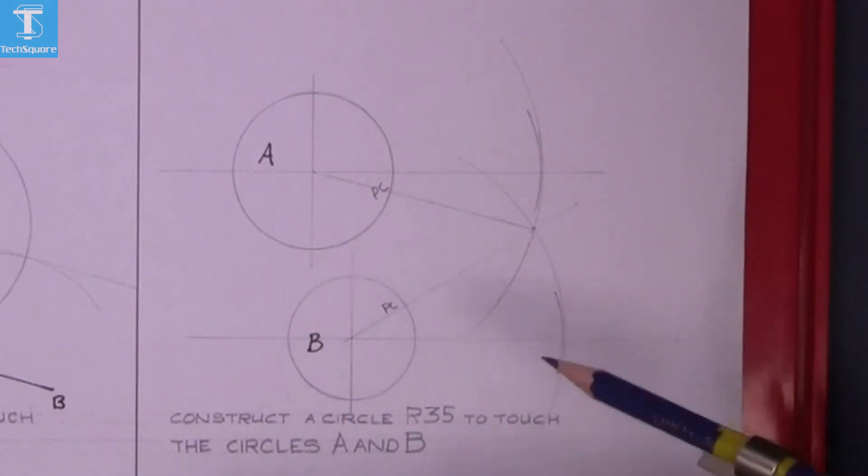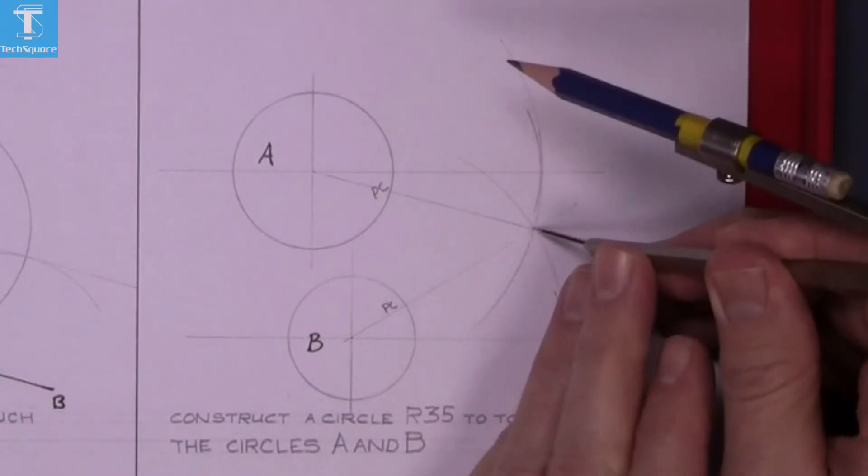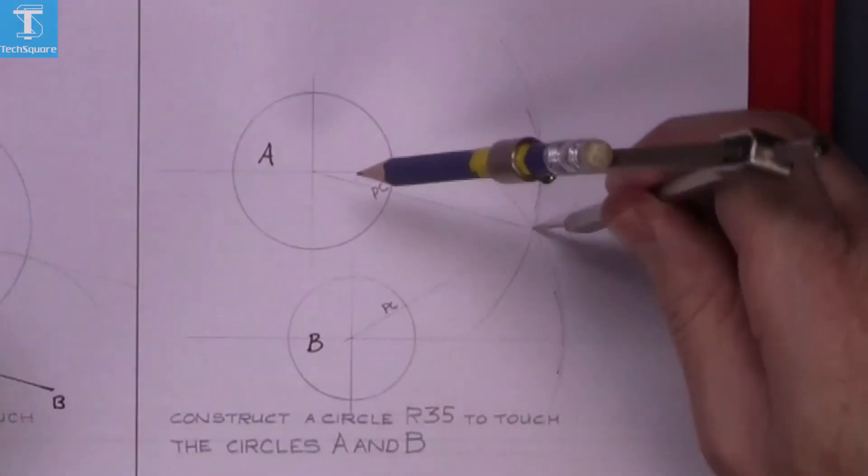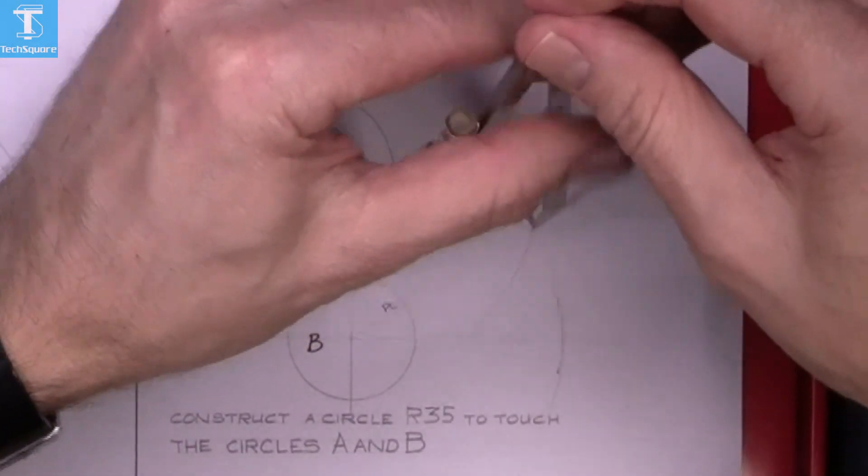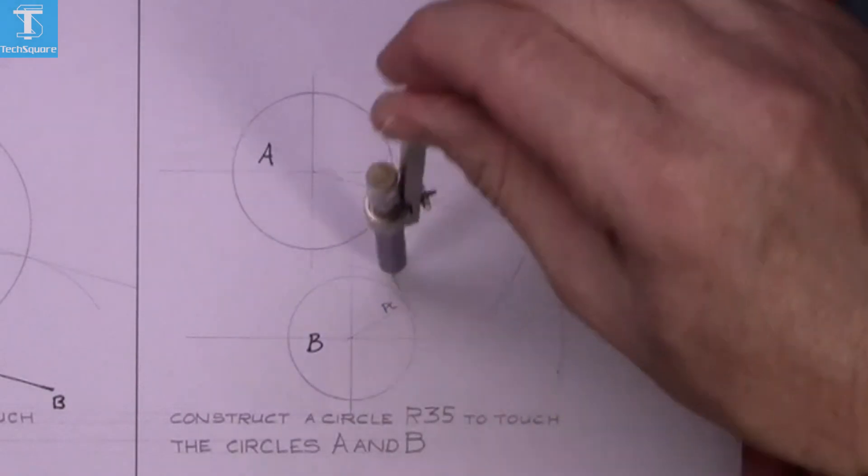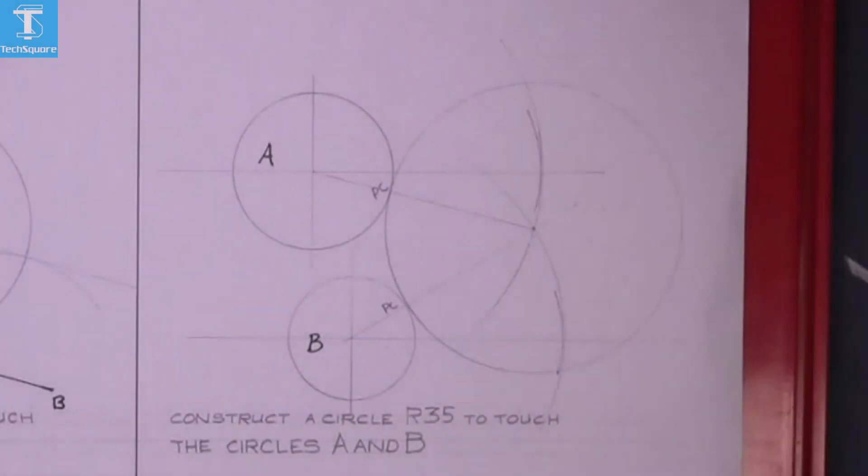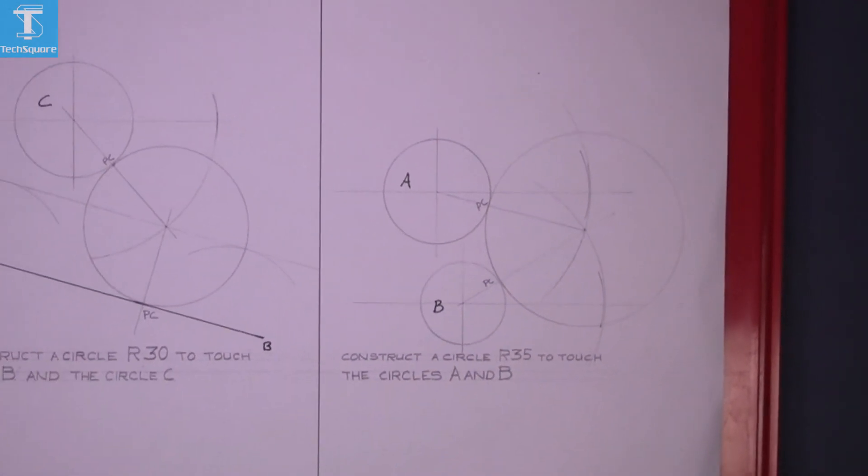Now set the compass to 35 and in the new center, draw your circle. And that's the question complete.